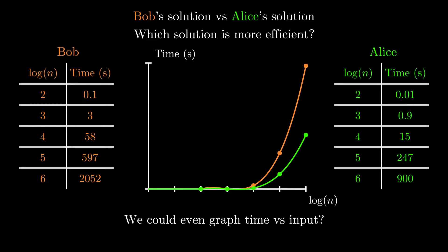And this is what the graph of time versus input looks like for these two approaches. And this is all a very reasonable way to measure the efficiency. It seems pretty clear from the graph, at least, that Alice's solution is noticeably better than Bob's. But there's one glaring problem. Take a second to think about why this might not be the best way to measure efficiency.